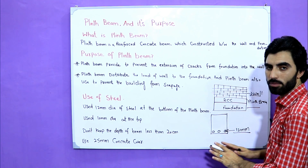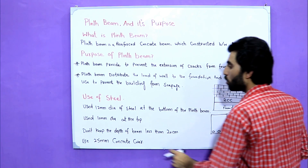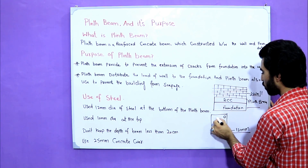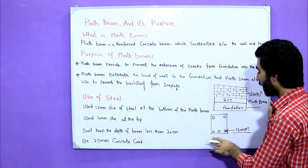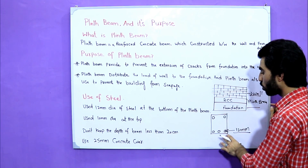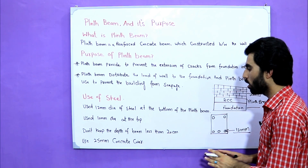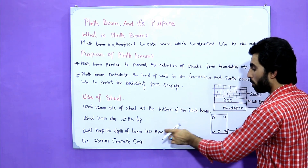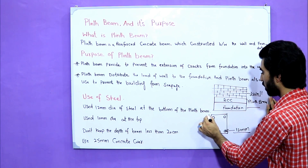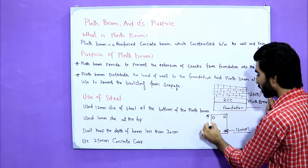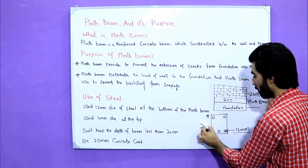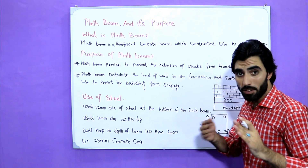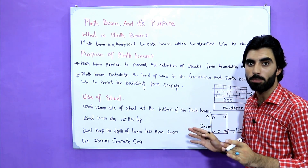And for plinth beam, use 10 millimeter diameter steel bar at the top — minimum 10 millimeter at the top, and minimum 12 millimeter diameter at the bottom. Now, don't keep the depth of the plinth beam less than 20 centimeters. It should not be less than 20 centimeters — minimum depth should be 20 centimeters. This applies if you don't have any design for the plinth beam.